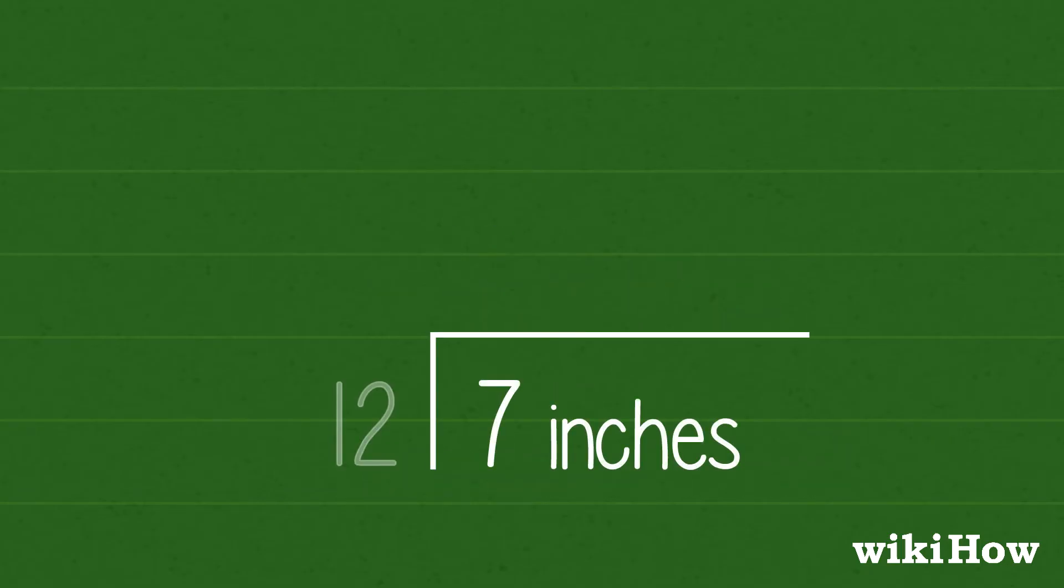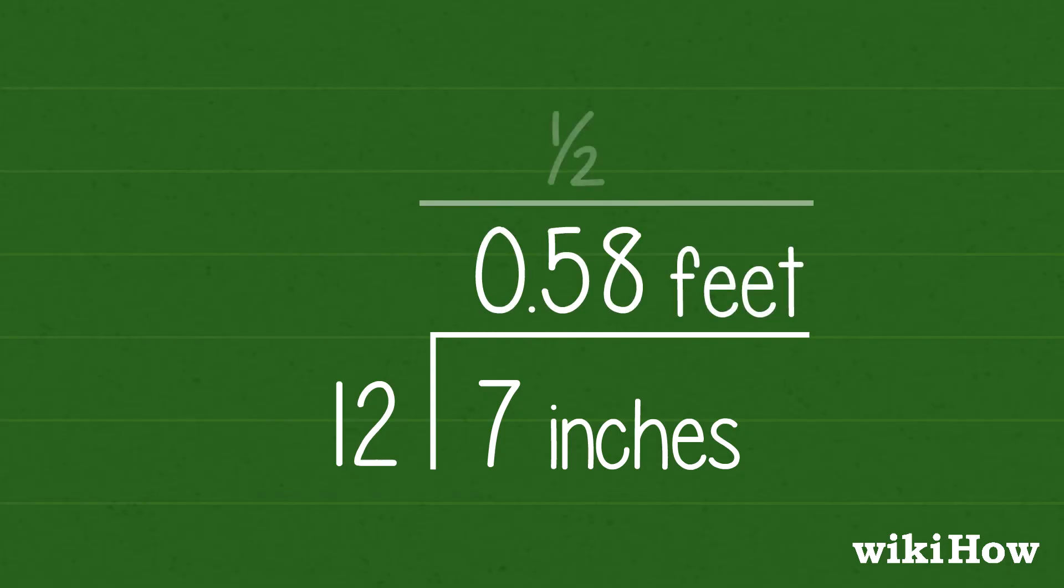For example, 7 inches divided by 12 gives you approximately 0.58 feet, or a little over half a foot.